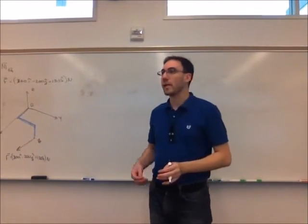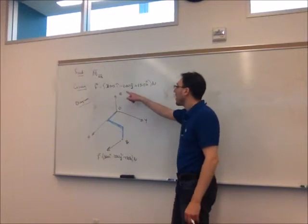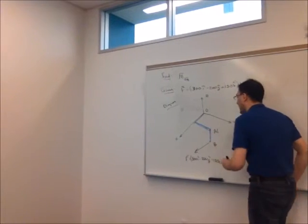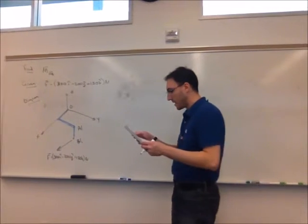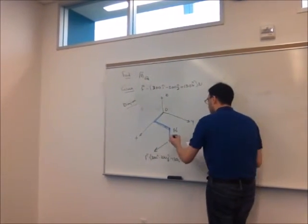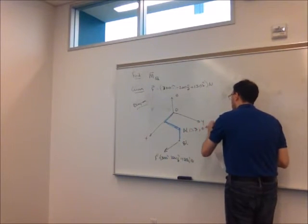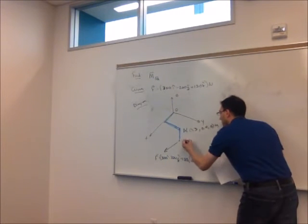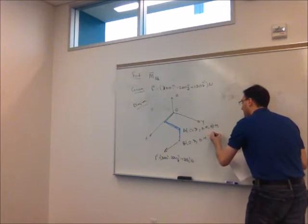So important coordinates we're going to need. First of all, F is acting at B so we're going to definitely need that. And we're looking for the moment around the OA axis. So we're also going to need the coordinate of A to make this a little bit easier for us. So writing these down, we're going to get that A is located at 0.3, 0.4, 0, and B is located at 0.3, 0.4, negative 0.2.